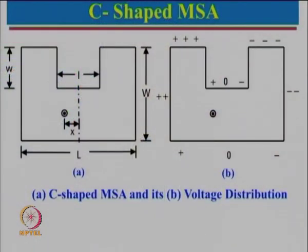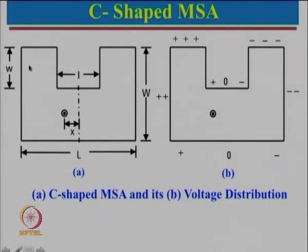Let us come back to the C-shape configuration. This is the antenna with a slot cut in it. By cutting this slot, the effective length changes. Earlier, the length of the rectangular patch was simply L. But now this length is still L for one part, while for the other part the current path goes around the slot — like this, and like this — so the effective length increases.